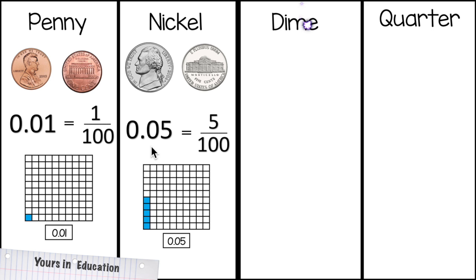The nickel is worth 5 cents, and this is how you write 5 cents in decimal form. In fraction, you will write 5 hundredths, because 1 dollar has 100 cents, and a nickel is only 5 cents.